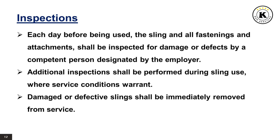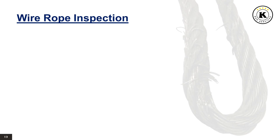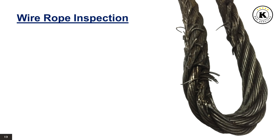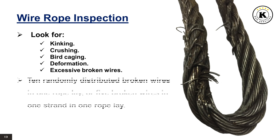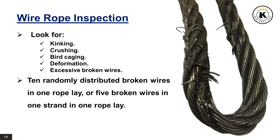Damaged or defective slings shall be immediately removed from service. For wire rope inspection, look for kinking, crushing, bird caging, deformation, and excessive broken wires — specifically 10 randomly distributed broken wires in 1 rope lay, or 5 broken wires in 1 strand in 1 rope lay.